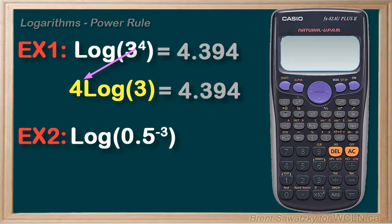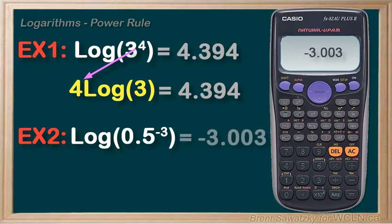So let's enter it into our calculator. Log of 0.5 to the negative 3, and we'd get negative 3.003 rounded a bit. So let's manipulate it using our new rule and see what we get.